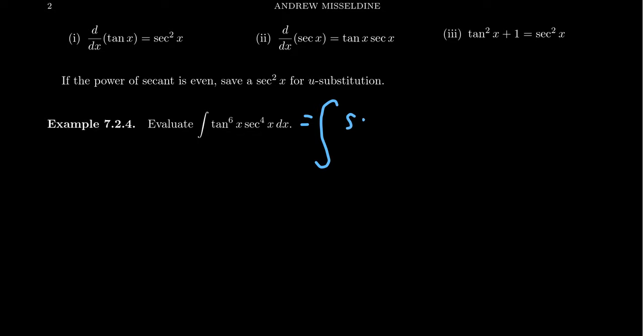Tangent to the sixth becomes a sine to the sixth over cosine to the sixth. And then you also get this one over cosine to the fourth x dx. You could combine that together, take sine to the sixth over cosine to the tenth and try to do something with that. I would say that that is a much more difficult approach, although doable.